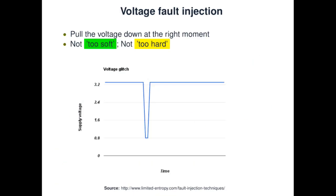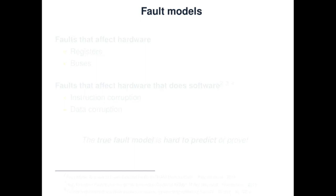The fault injection technique I would like to emphasize is the one we will also demonstrate here on stage today, which is voltage fault injection. Basically, this works by providing your own voltage to the target and pulling down the voltage at the right moment in order to change the intended behavior. If you do this not too soft and not too hard, right in the middle on the so-called sweet spot, you change the behavior of the target at the specific moment in time without affecting the rest of the system.